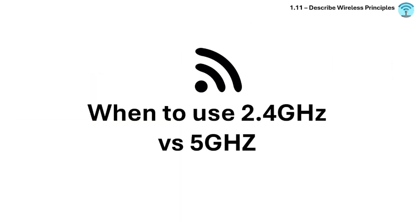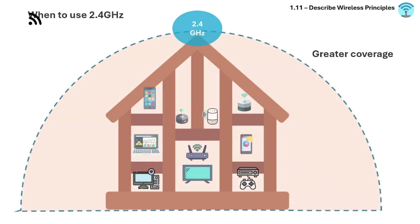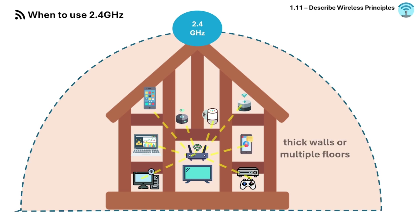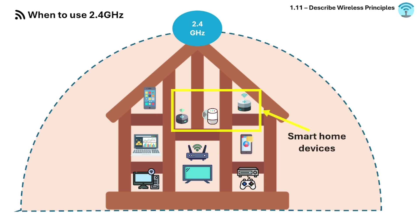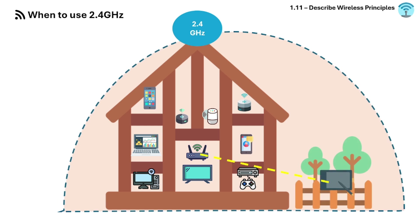Here is a comparison between 2.4 GHz and 5 GHz along with when to use each one. Choose 2.4 GHz if you need greater coverage, are farther from the router, your signal has to pass through thick walls or multiple floors, you're doing basic tasks like browsing or email, or you're setting up smart home devices like cameras that often only support 2.4 GHz. For example, in a three-story house, 2.4 GHz is better for reaching far corners.